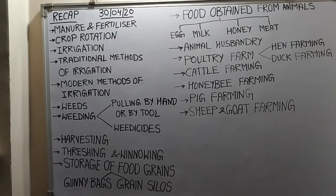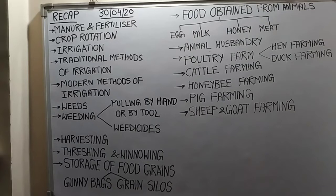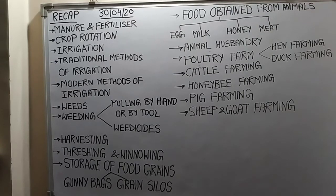The third method is crop rotation — growing different types of crops alternately in the same field. Leguminous crops like peas, beans, and groundnut are alternately grown in the same field with wheat, maize, and paddy. This is because leguminous plants have rhizobium bacteria in their root nodules, which directly convert atmospheric nitrogen into nitrogen compounds that mix with the soil and improve its fertility, making the soil rich in nitrogen for the next crop.